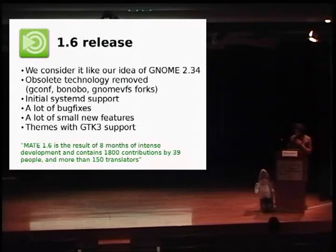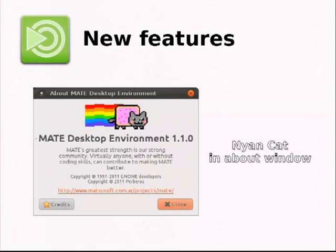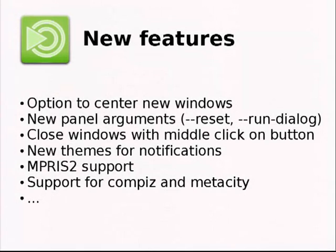The new features in MATE — we can start with the Nyan Cat. This was the first difference between GNOME 2 and MATE, but it is now removed to give MATE a more serious experience. The new features in the latest release include the option to center new windows, like GNOME 3. We added new arguments to the panel, like the option to reset the configuration. This was a missing feature in GNOME 2. And also a way to start the run dialogue, because if the user uses a different window manager from the default one, there's no option to run the dialogue. In MATE, you can also close windows with the middle click of the mouse on the taskbar window list.